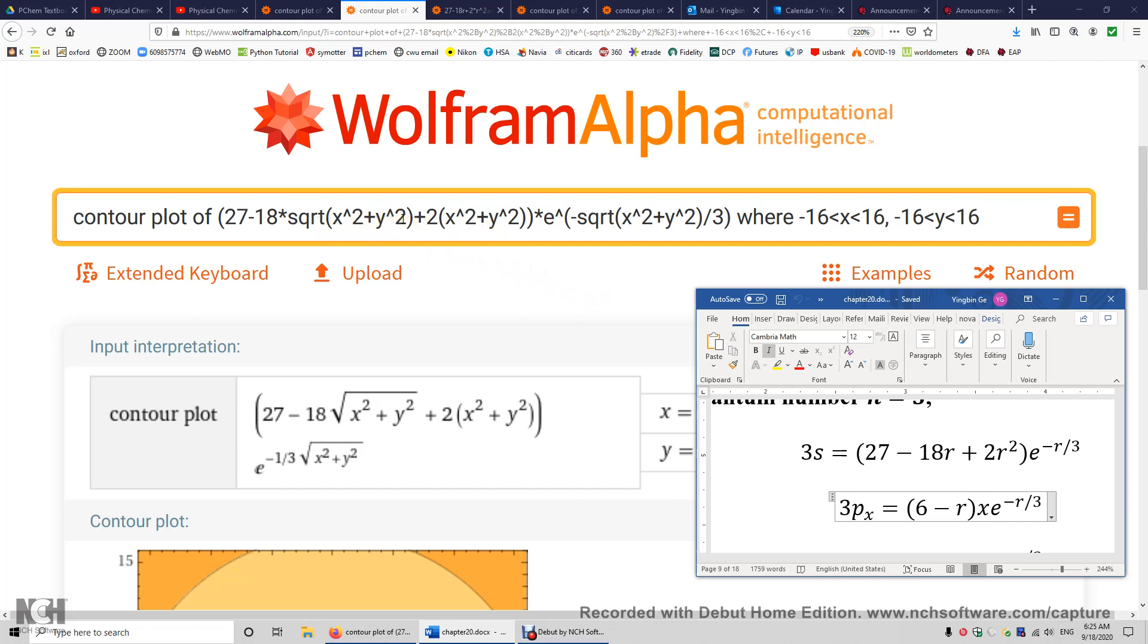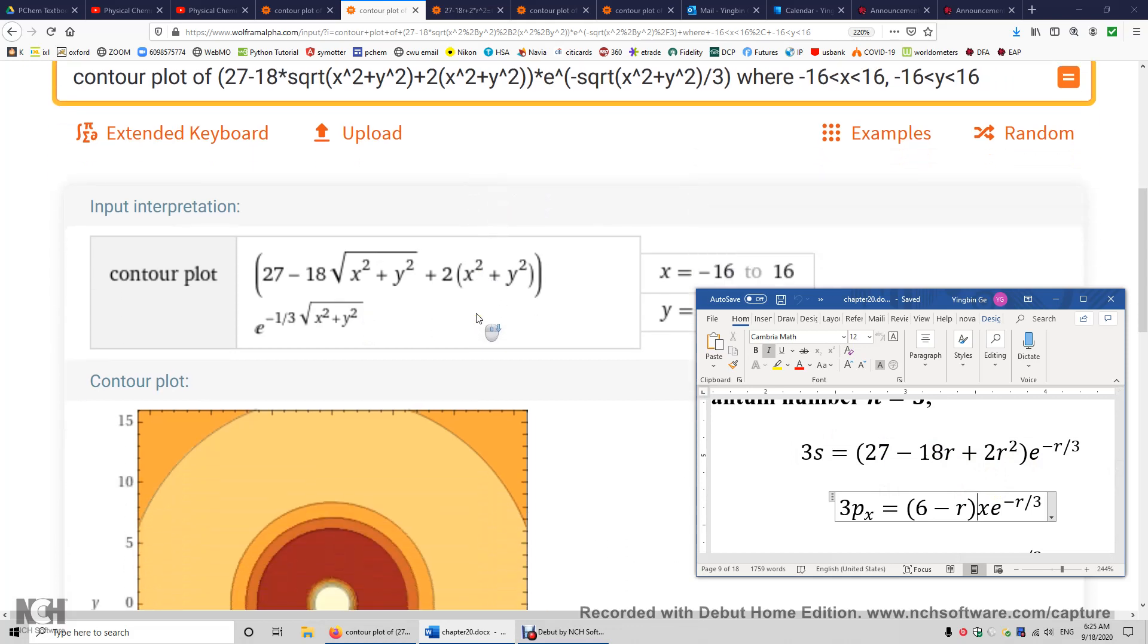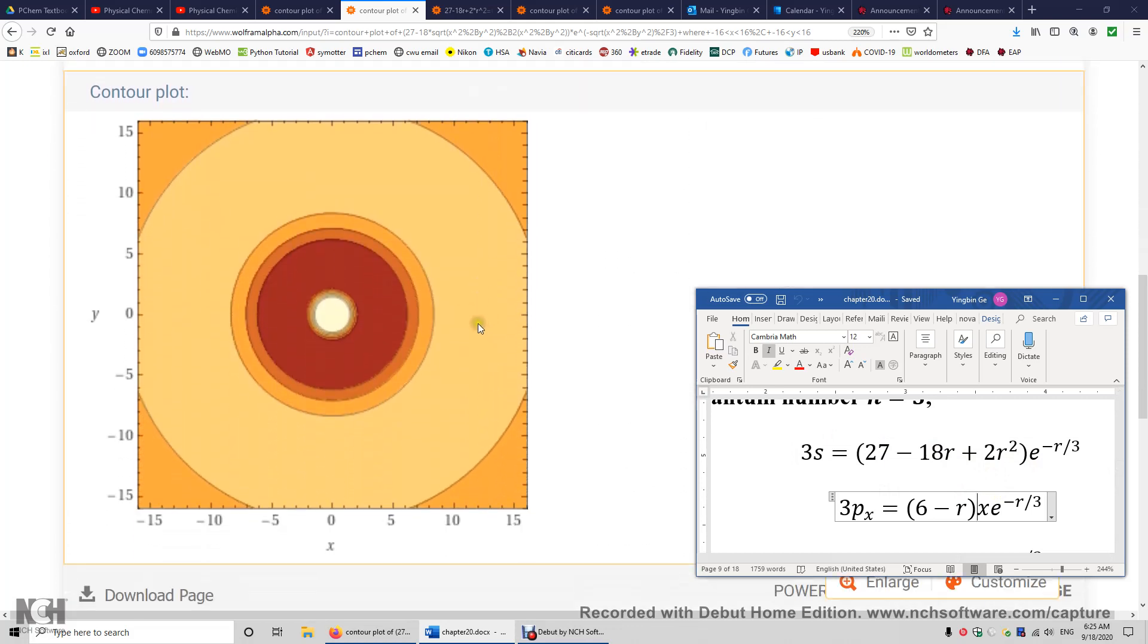So over here, r is just the square root of x squared plus y squared. Again, you're looking at 27 minus 18r plus 2 times r squared times e to the power of negative r over 3, this function. So this time, WolframAlpha was able to draw the 3s atomic orbital.